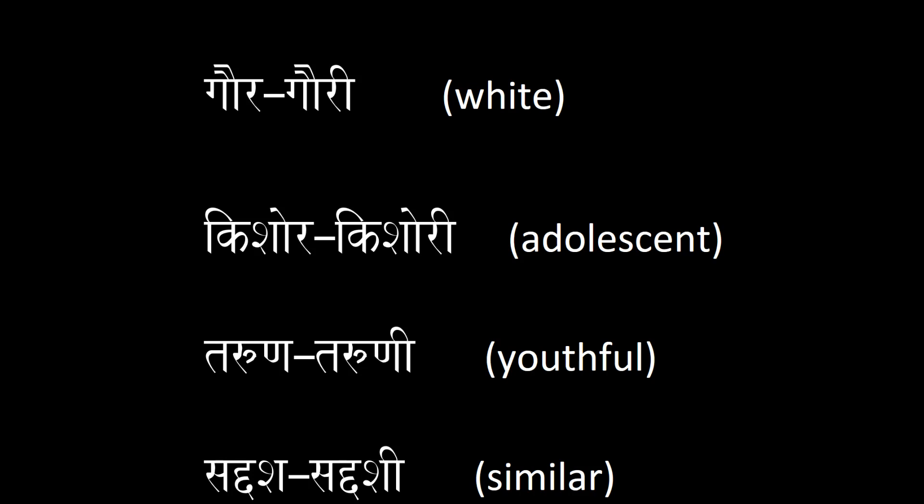When you are describing an adolescent that is masculine, you would use kiśora, but for a feminine person such as a girl, you would say kiśorī. For youthful, a youthful boy you would say taruṇa, but a youthful girl you would describe as taruṇī with a long 'ī'.